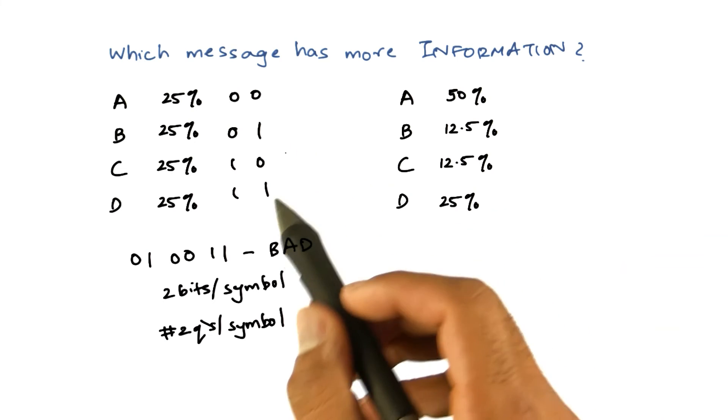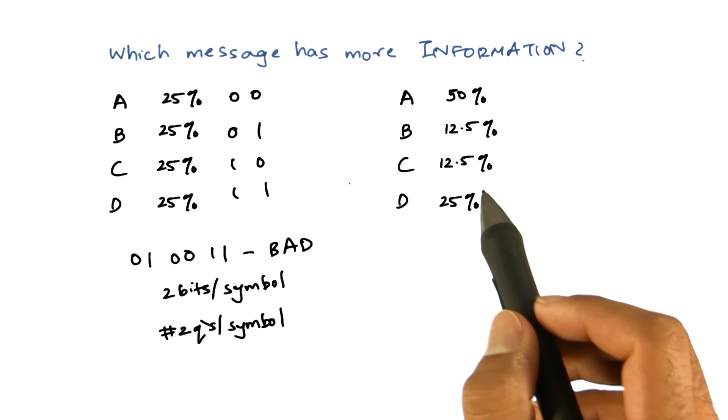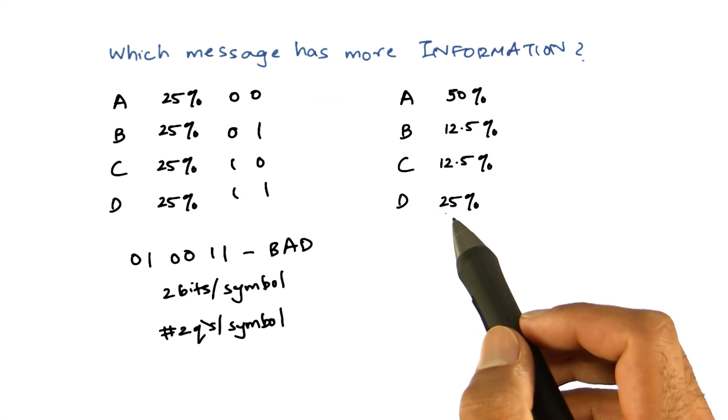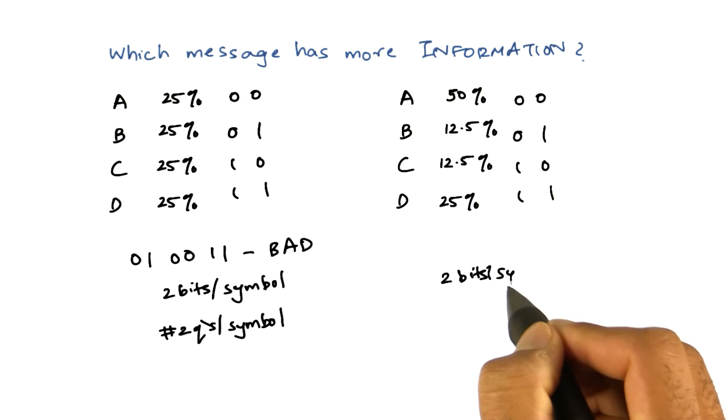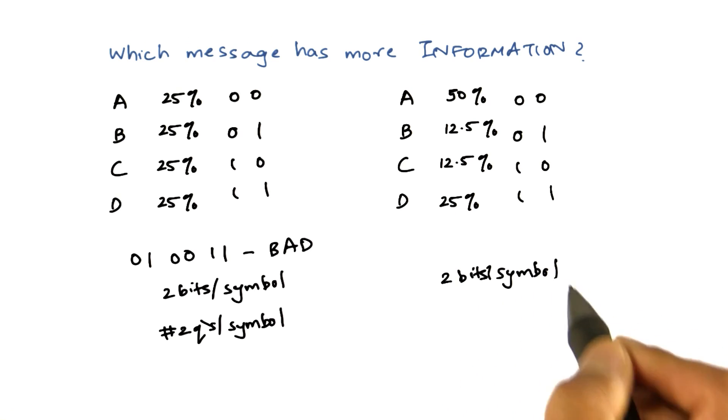Now we can do the same thing again. We can use the same binary representation to represent A, B, C, and D. So again, we'll end up with two bits per symbol.